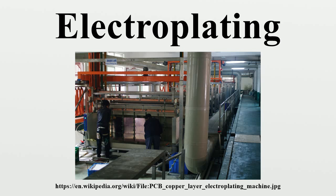The plating is most commonly a single metallic element, not an alloy. However, some alloys can be electrodeposited, notably brass and solder. Many plating baths include cyanides of other metals in addition to cyanides of the metal to be deposited. These free cyanides facilitate anode corrosion, help to maintain a constant metal ion level, and contribute to conductivity. Additionally, non-metal chemicals such as carbonates and phosphates may be added to increase conductivity. When plating is not desired on certain areas of the substrate, stop-offs are applied to prevent the bath from coming in contact with the substrate.